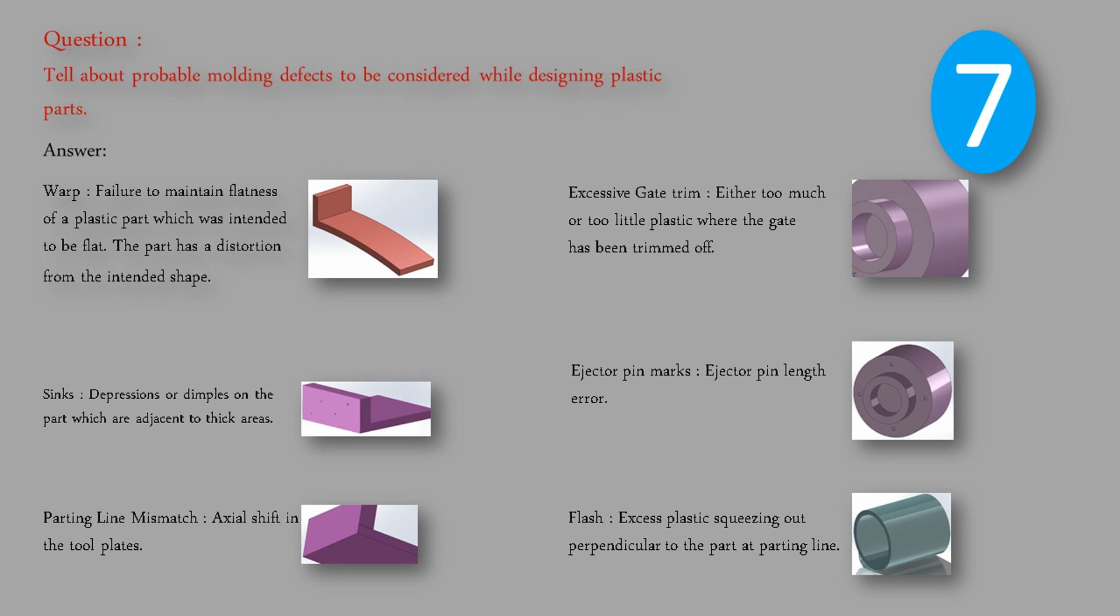Sinks - depressions or dimples on the part which are adjacent to thick areas. Parting line mismatch - axial shift in the tool plates. Excessive gate trim - either too much or too little plastic where the gate has been trimmed off. Ejector pin marks - ejector pin length error. Flash - excess plastic squeezing out perpendicular to the part at parting line.